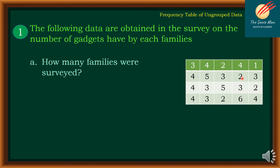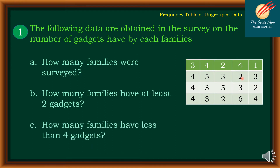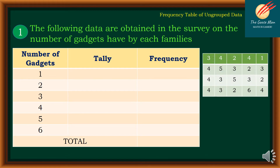Let's try to answer the following questions: How many families were surveyed? How many families have at least two gadgets? And how many families have less than four gadgets? To answer these, we will construct a frequency table with columns for number of gadgets, tally, and frequency.